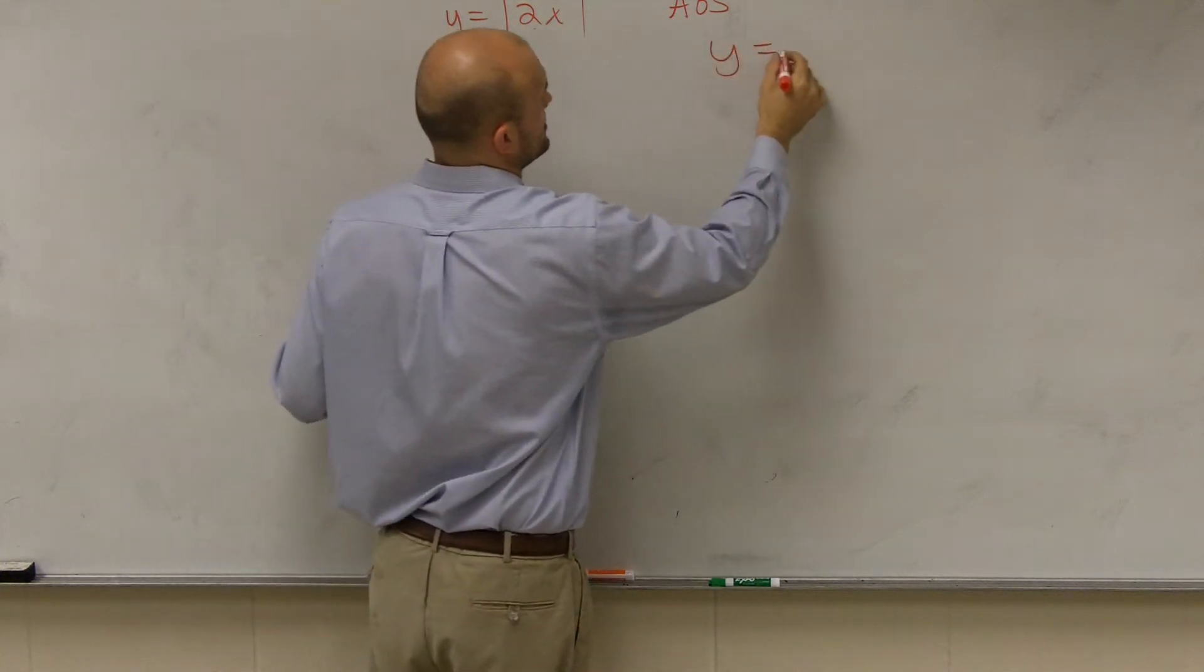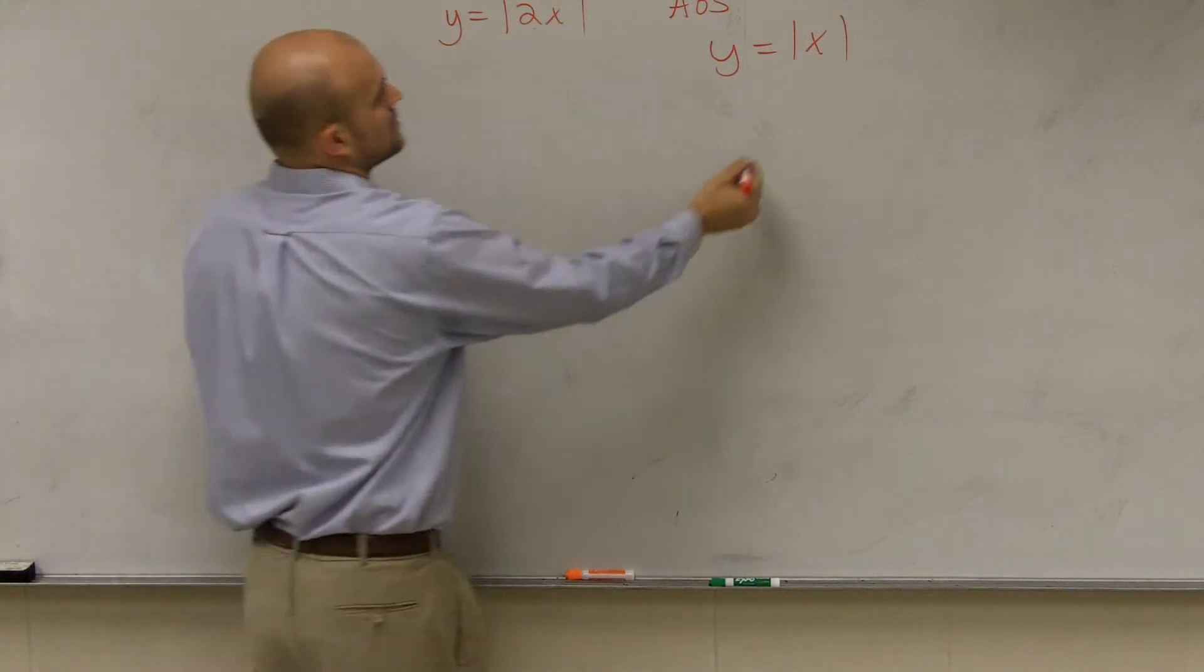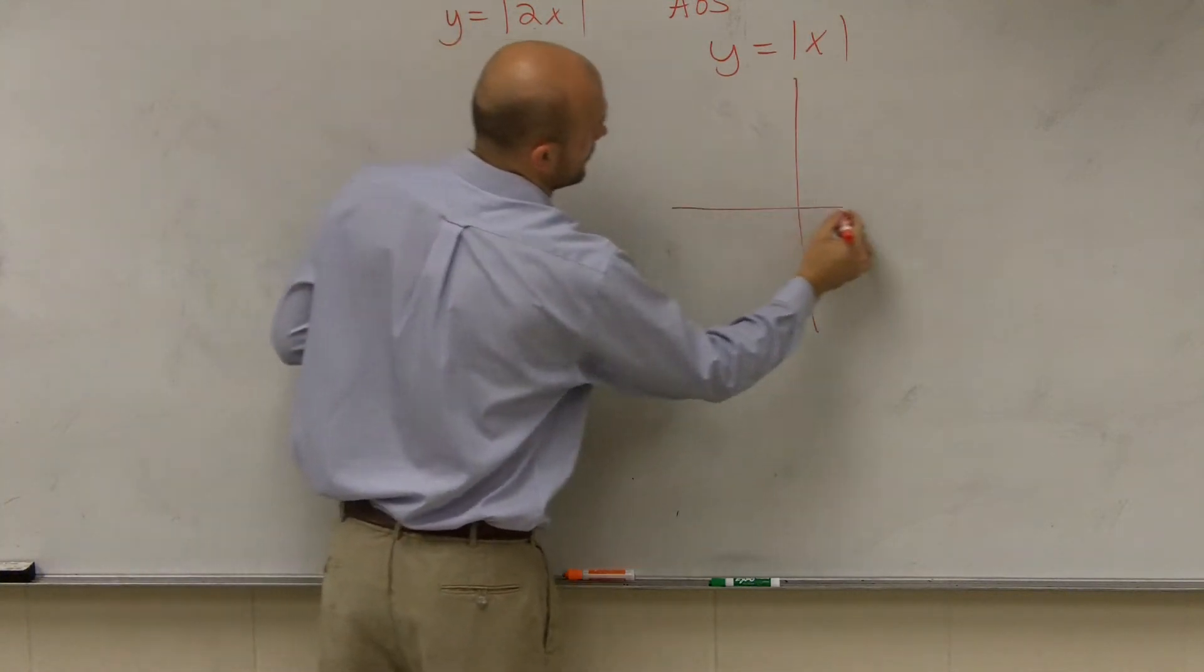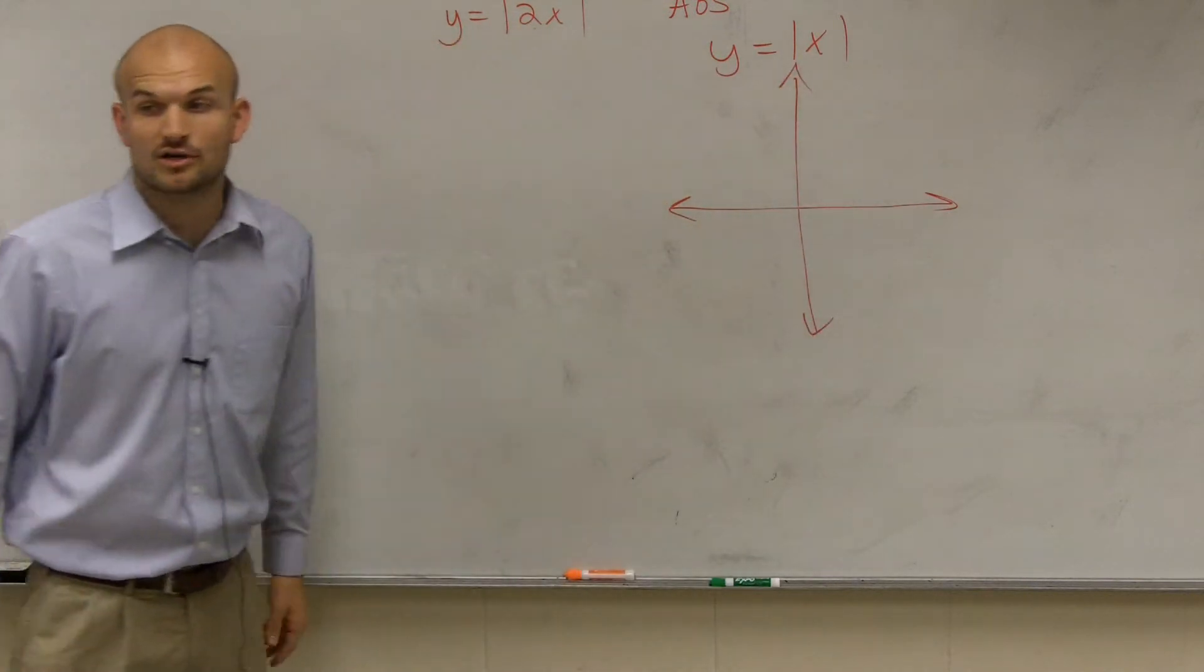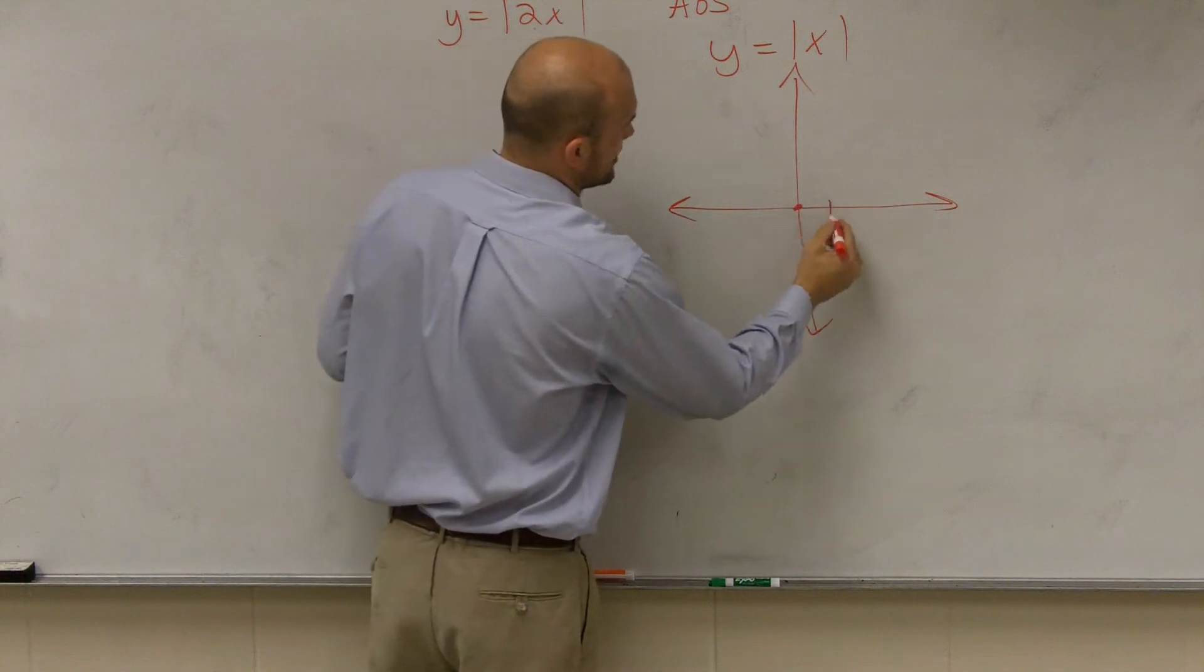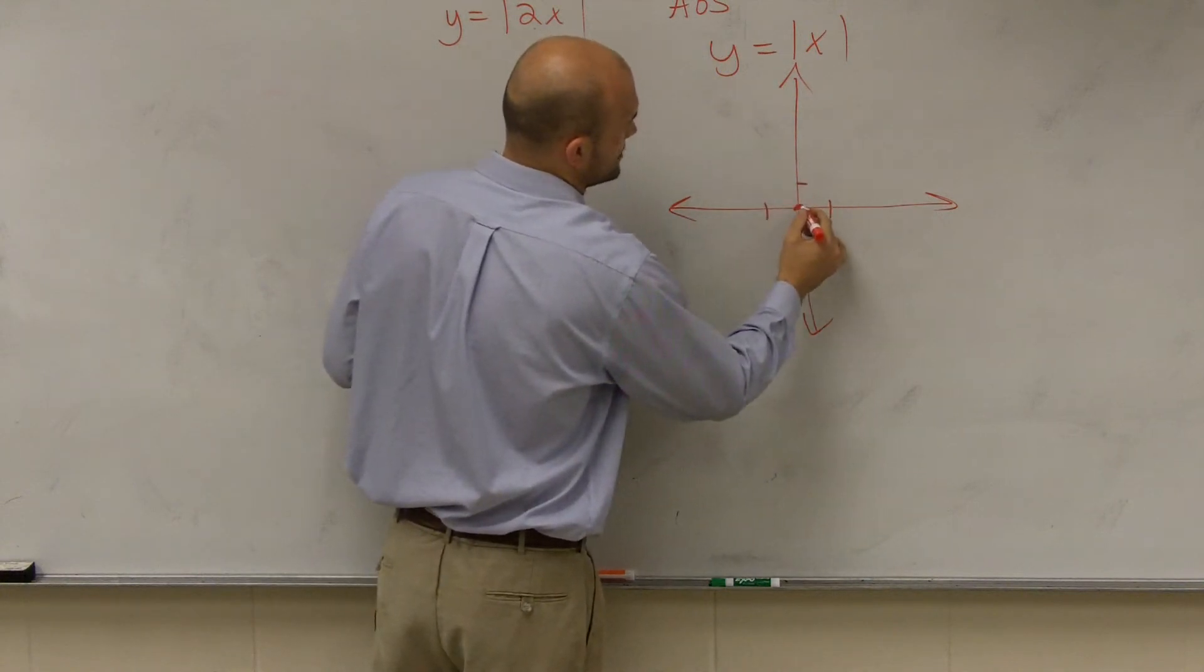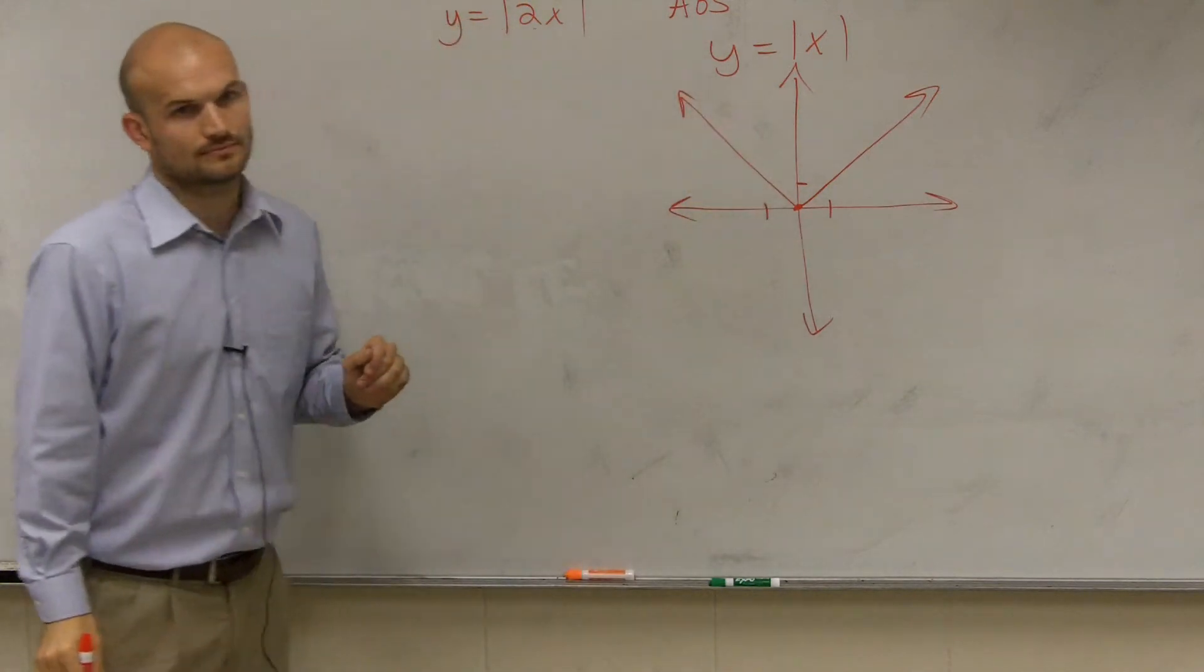So I know my graph looks like this, or my function looks like that, right? So I know so far that I can graph the parent function because I have studied the parent function of absolute value. And I know it looks like a v with a one-to-one ratio. So it looks something like that.